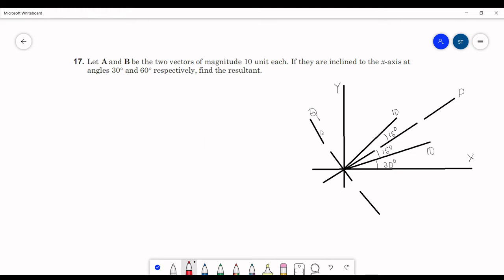Here I am taking the representation of the vectors. Let us take this vector as A and this vector as B. Both are having equal magnitudes 10, and A is at an angle 30 degrees with the x-axis and B is at an angle 60 degrees with the x-axis.